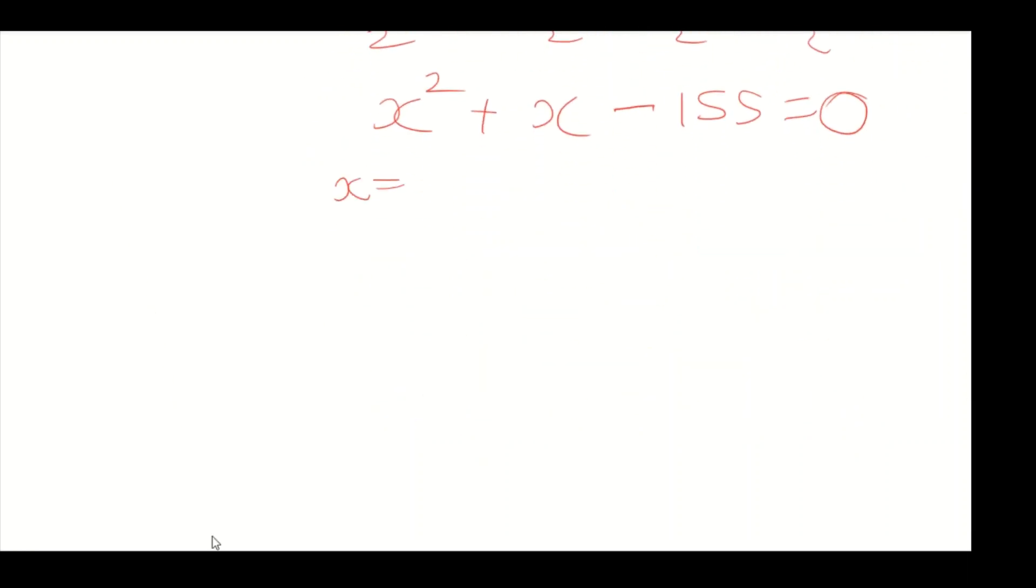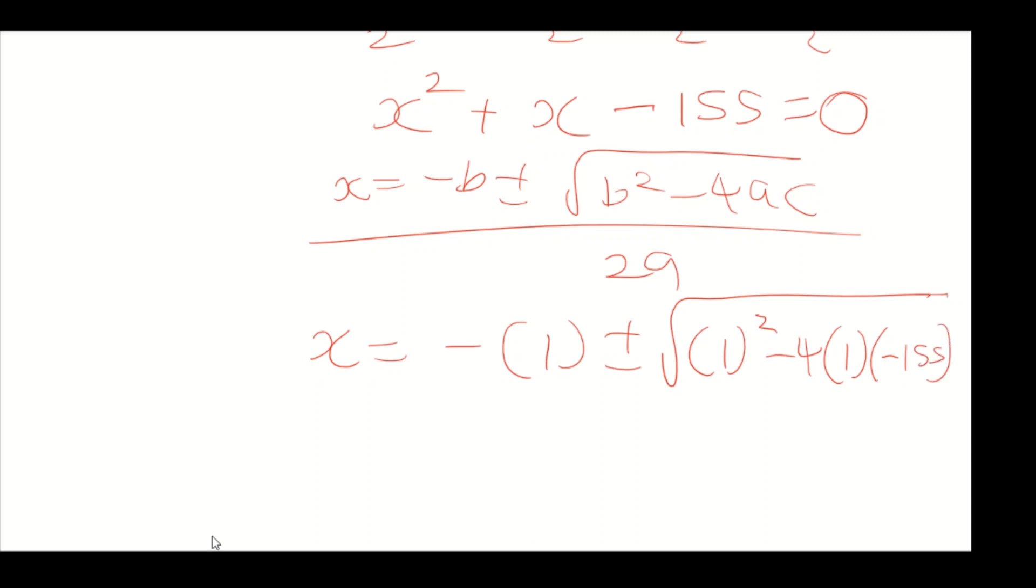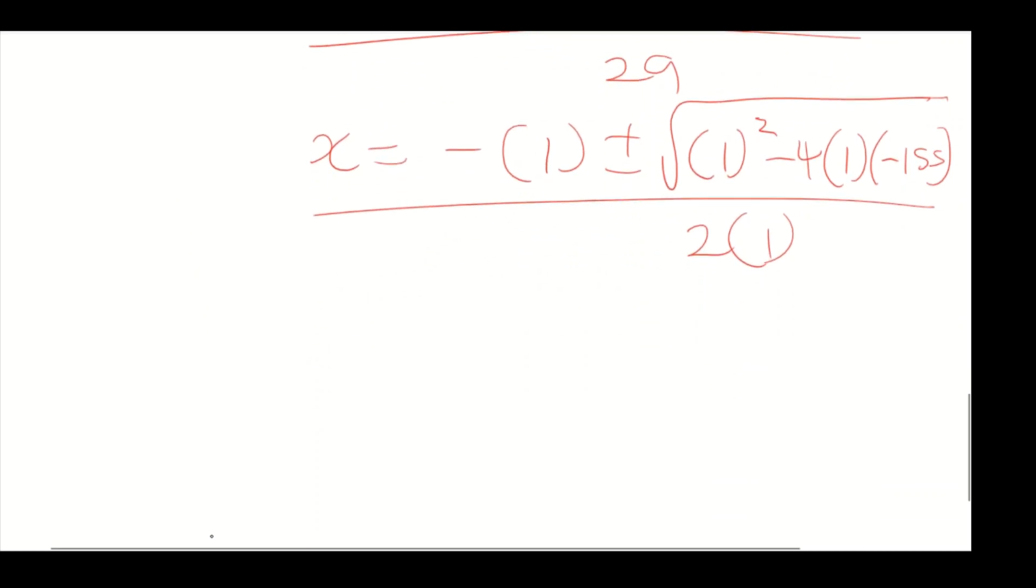We can't factorize this, so we use the quadratic formula: x equals minus b plus or minus the square root of b squared minus 4ac all over 2a. So x equals minus 1 plus or minus the square root of 1 squared minus 4 times 1 times minus 155, all divided by 2 times 1.